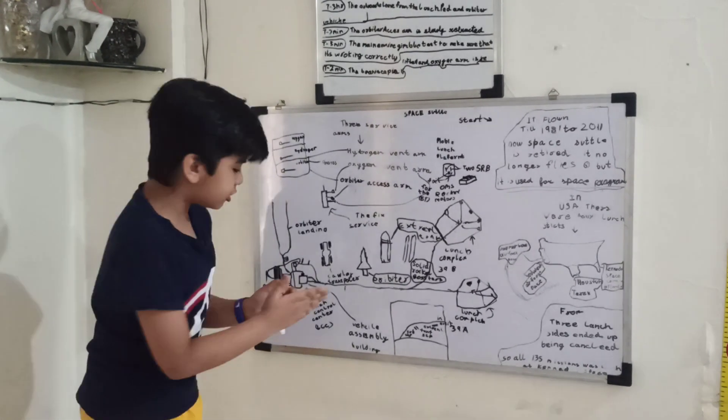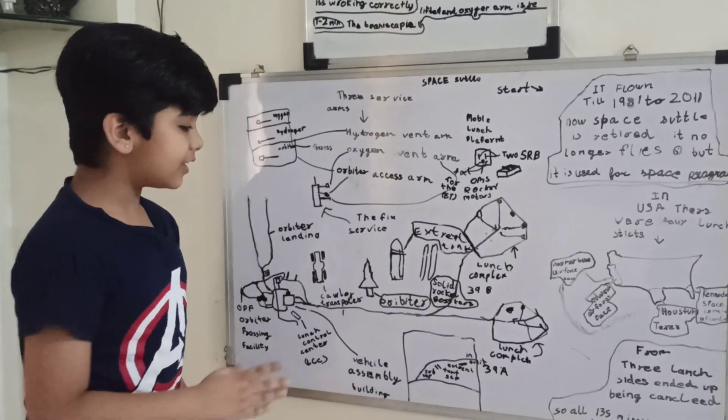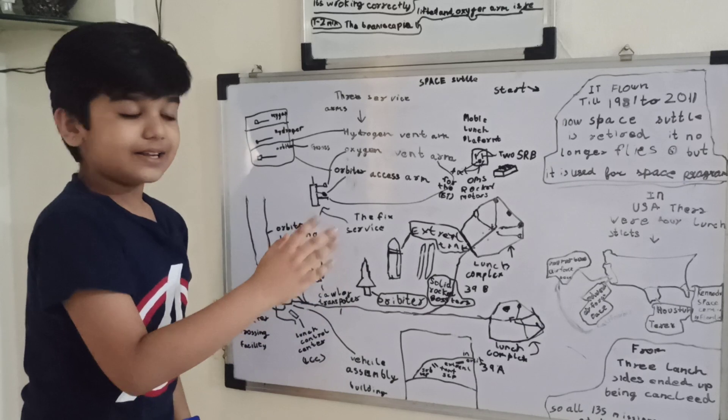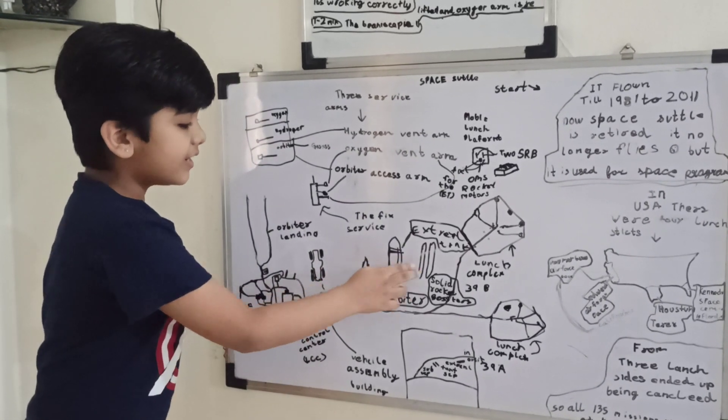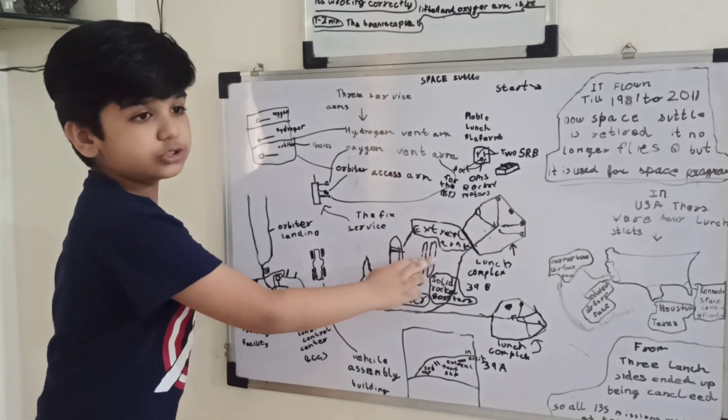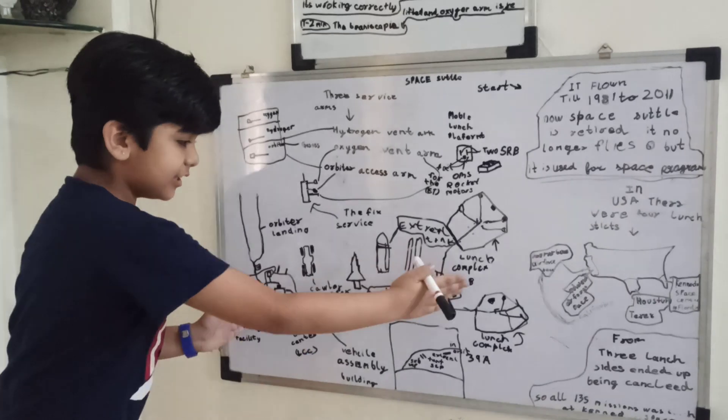So let us take a closer look at the Kennedy Space Center in Florida. First, we will learn the parts of the orbiter of the space shuttle. There is an orbiter, external tank, and the two solid rocket boosters, SRBs. Now let us look at the Kennedy Space Center.